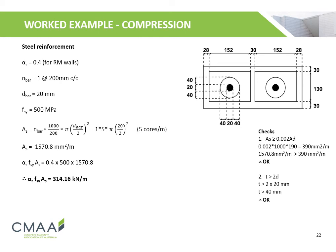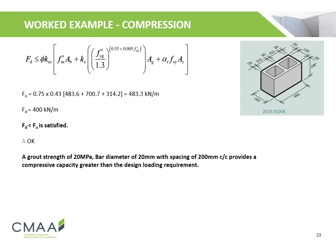The strength contribution provided by the steel reinforcement is calculated. The reinforcement contribution factor alpha-R (αR) is 0.4 for reinforced masonry walls. The number of bars is 1 at 200 millimeters center to center, with a bar diameter of 20 millimeters and a characteristic yield strength of 500 MPa. The area of steel reinforcement is calculated to be 1570.8 mm² per meter. Before this value can be used, it must satisfy two checks: the area of steel must be greater than or equal to 0.002 times the design cross-sectional area, and the steel must be surrounded by an annulus of grout at least two times the bar diameter thick. Both checks are met. Thus, the strength contribution provided by the steel reinforcement is 314.16 kN per meter.